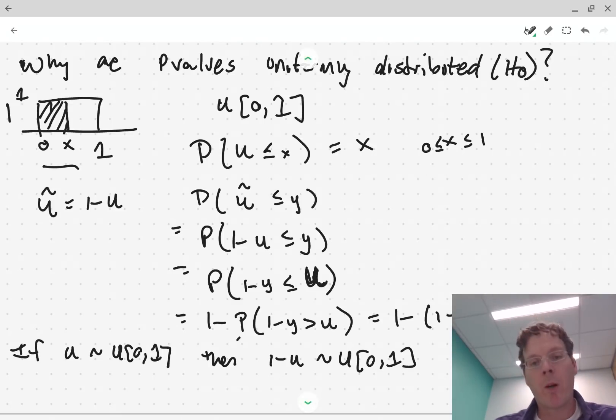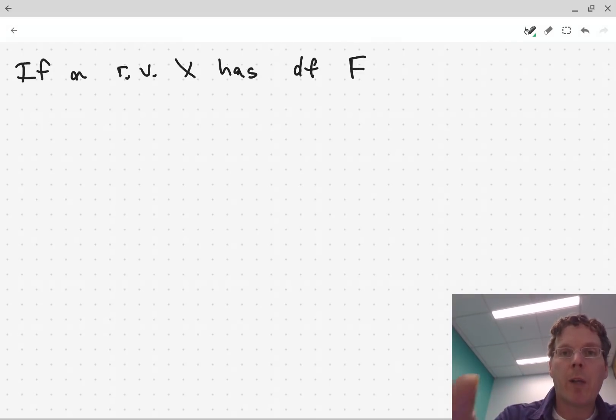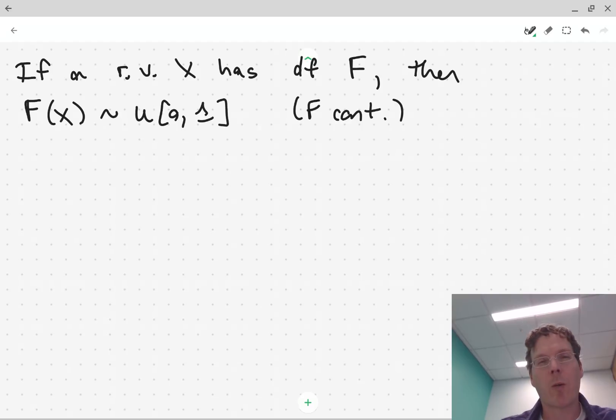Okay? All right, so that's some background knowledge. Oh, well, even one other thing, another interesting fact. So if a random variable, random variable X, has distribution function capital F, then F of X is uniform 0, 1. And I'm dealing here with F continuous. You can prove these sorts of things when F is discrete, but because of the jumps, you have to use different arguments. And so let's forget about that, just deal with F being continuous.